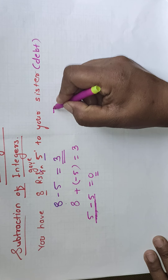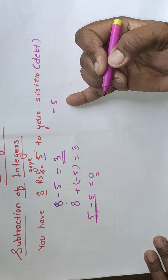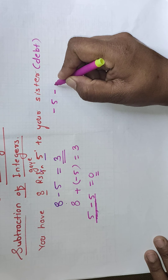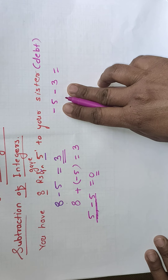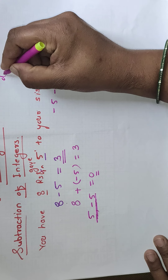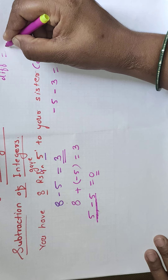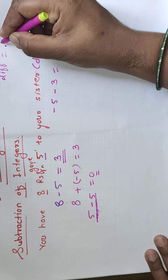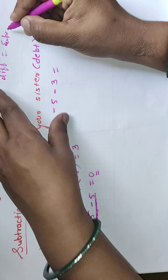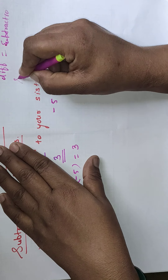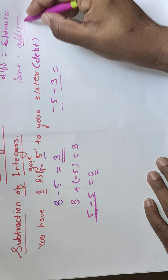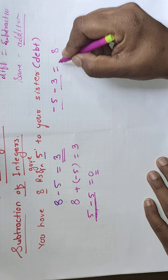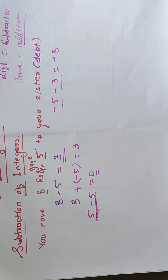Now we will see the example: minus 5 minus minus 3. So you know that if signs are different, we have to do the subtraction, and if signs are same, we do the addition. Here signs are same, so we have to do the addition. The answer is 8, and the answer will get the bigger number's sign.